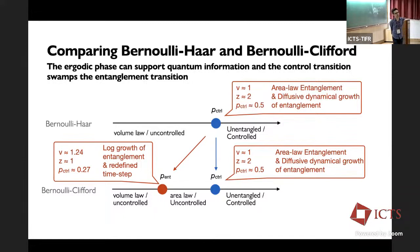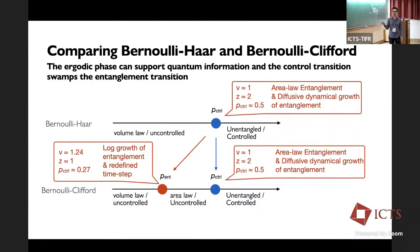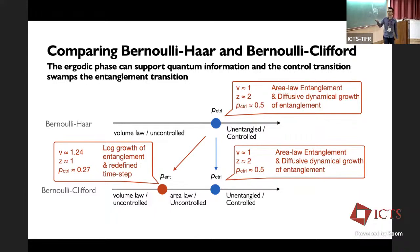Asked whether this is more like the purification picture or the original volume/area law picture: the purification dynamics gets all the features. The fact that we get exponents that match classical ones means the control transition swamps out anything that would have come from the entanglement transition. When we split off the entanglement transition in the Clifford case, we do see volume law, area law, and log growth at the transition — but the control transition properties still appear separately.